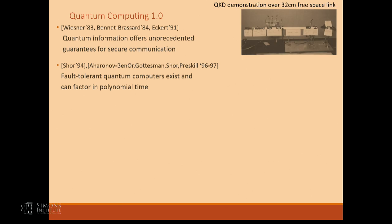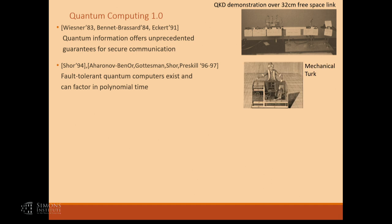That's one of the first experiments for QKD — it's over 30 centimeters and it's absurdly noisy and absurdly slow. But you could do experiments already in the 90s, just sending one photon at a time. In terms of computers, this we definitely didn't have. That's the best quantum computers that you had in the 90s — it's all very hypothetical.